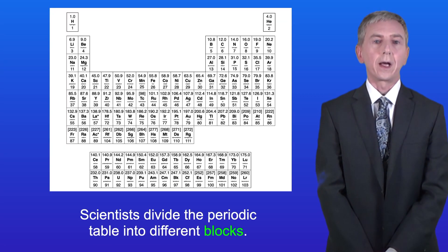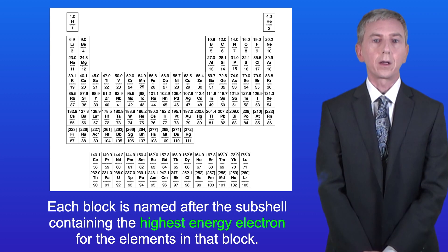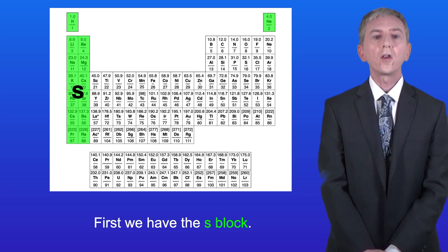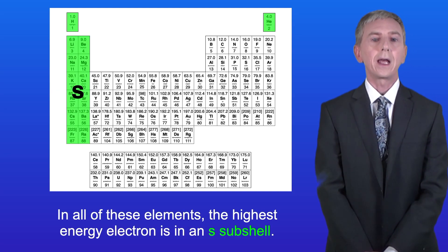Now the first key idea you need to understand is that scientists divide the periodic table into different blocks. Each block is named after the subshell containing the highest energy electron for the elements in that block. So first we've got the s block, and in all of these elements the highest energy electron is in an s subshell.